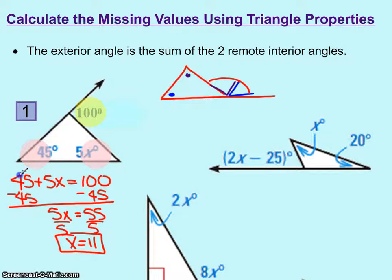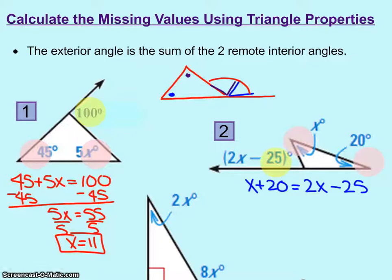These next two examples are the same kind of problems. For number two, pause the video, set up the equation based on what you understand, then double check your work and see if it looks like mine. I took the two remote interior angles — the one with x and the one with 20 — added them together on the left, and set them equal to the outside angle of 2x minus 25. Pause the video, finish solving that, and we'll check your work.